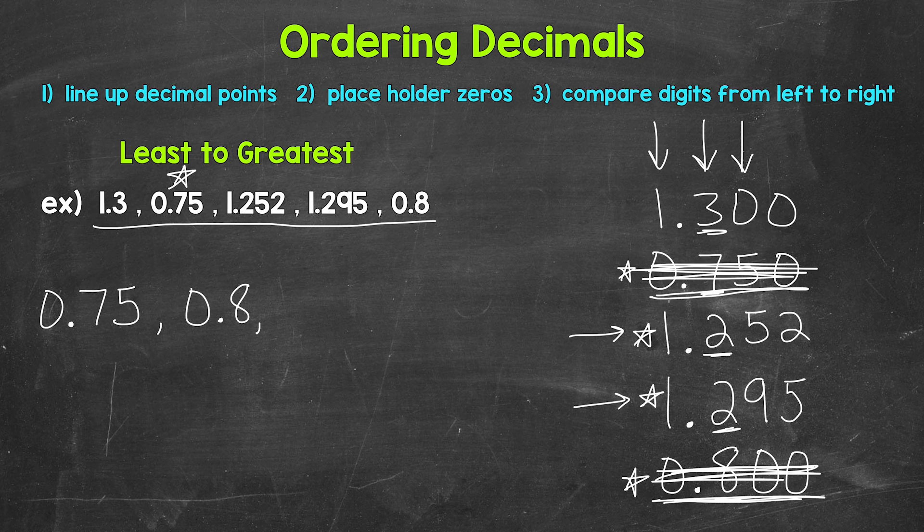And compare those digits. We have a five and a nine. Five is less than nine. So that comes next. One and 252 thousandths. And we can cross this off.